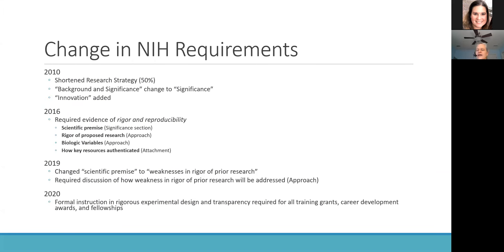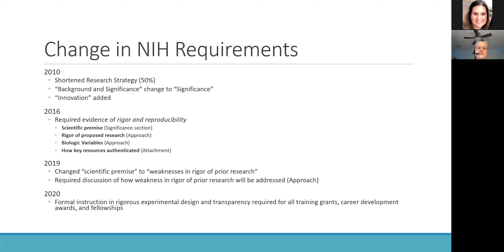From these findings, the NIH wanted to move forward and think about how to change their requirements to enhance the likelihood of both rigorous and reproducible science coming out of funded projects. Here is the timeline for changes that happened in the NIH that we're all subjected to — to understand what they were doing to address these issues of rigor, and to understand that this is a changing landscape. The NIH is constantly reevaluating and updating, and we as researchers need to be aware.